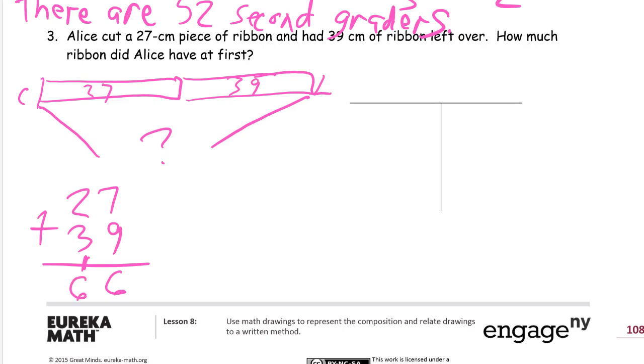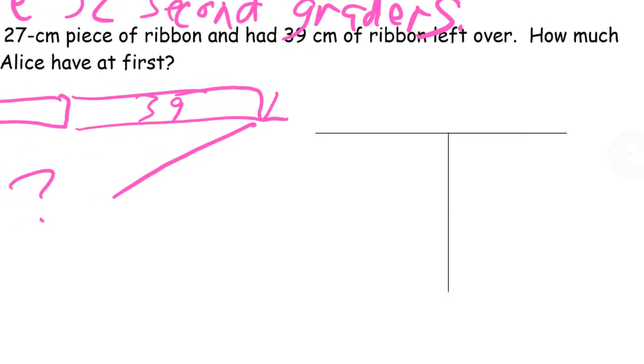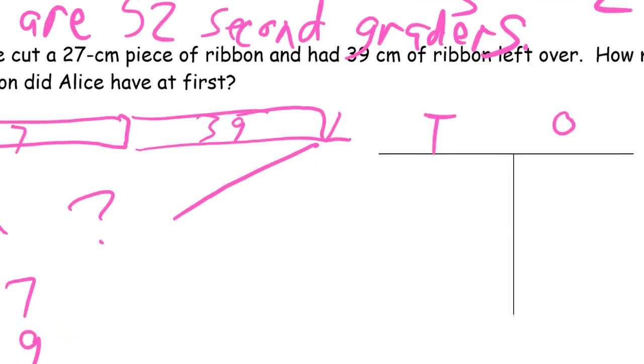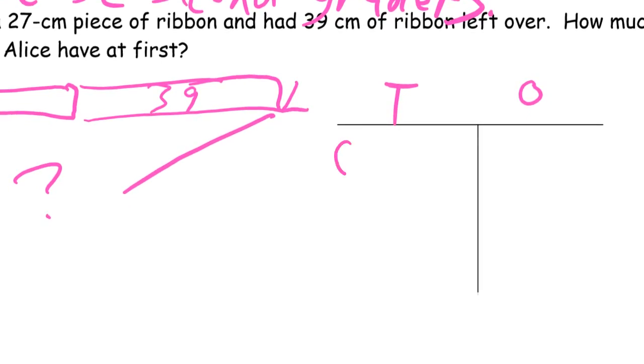10s, 1s. 27 and 39, so 27 is 2 10s and 7 1s: 1, 2, 3, 4, 5, 6, 7.